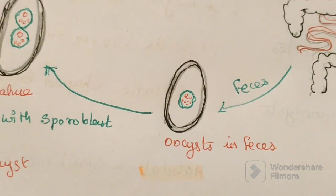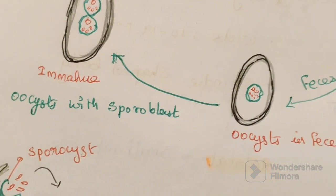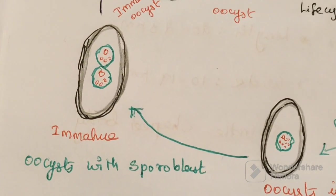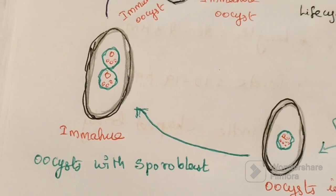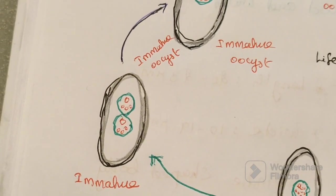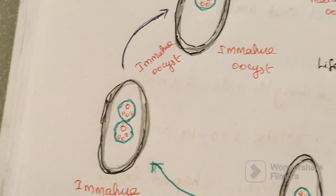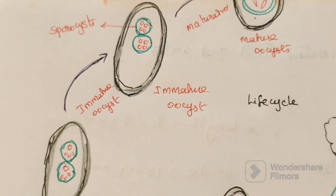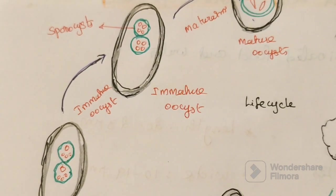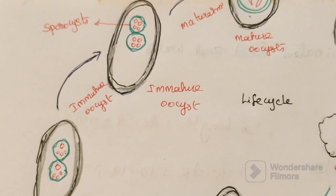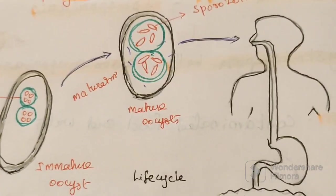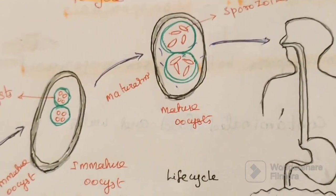First stage: immature oocysts with a sporoblast will be developed. Next stage: the immature oocyst develops further, and a sporocyst wall is formed. After the maturation process, inside the sporocyst, a mature oocyst develops. This process is called maturation.